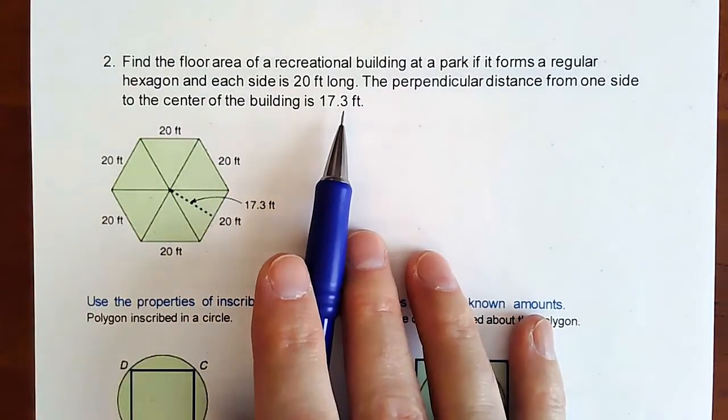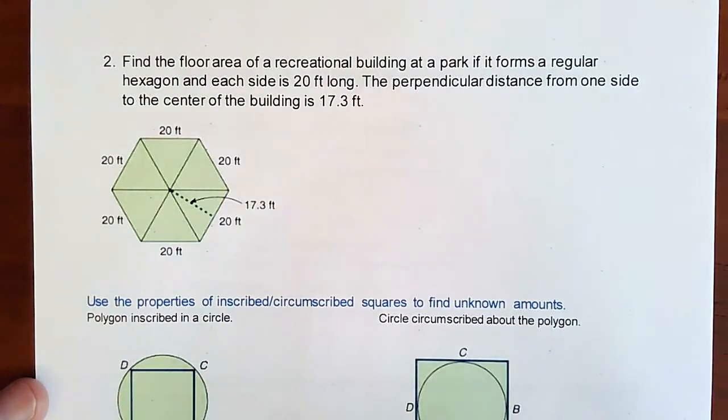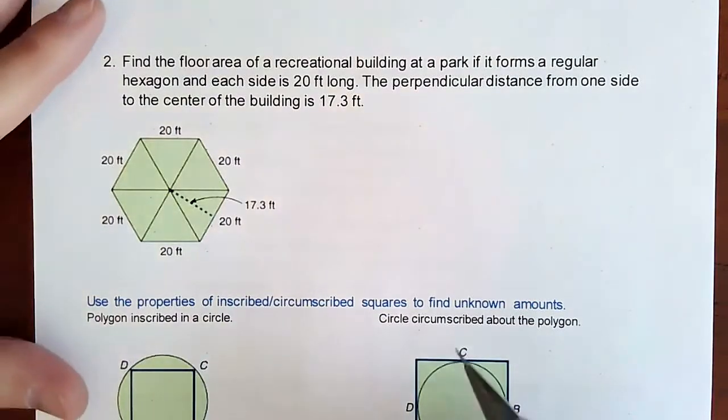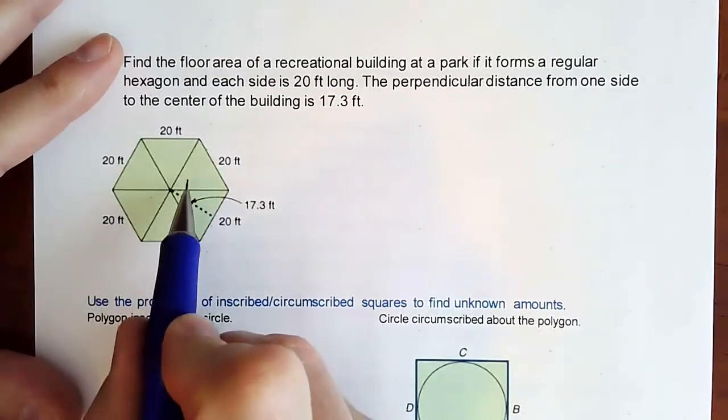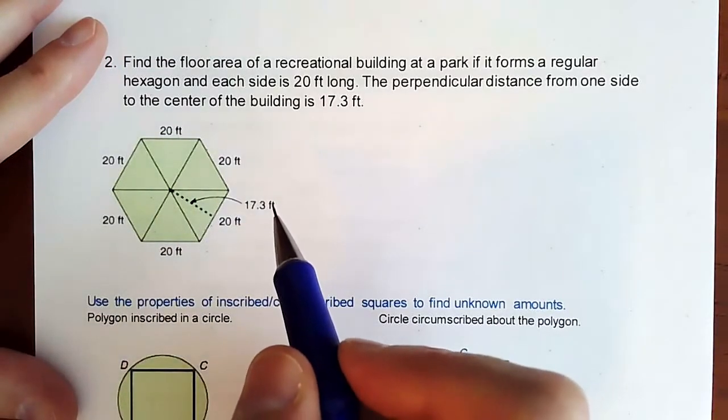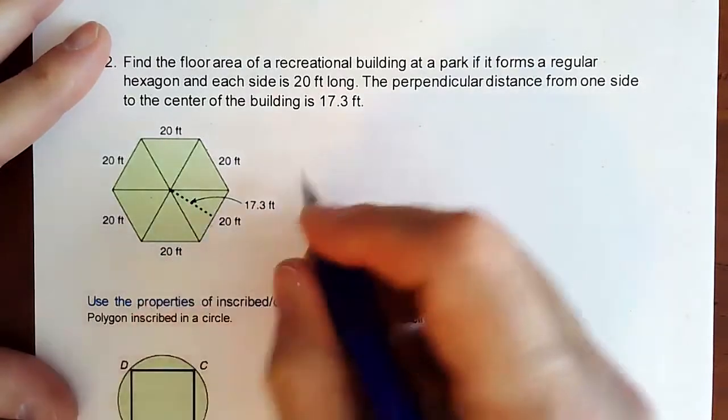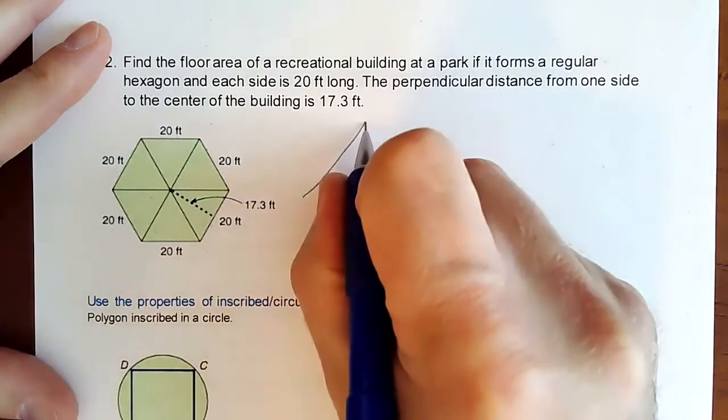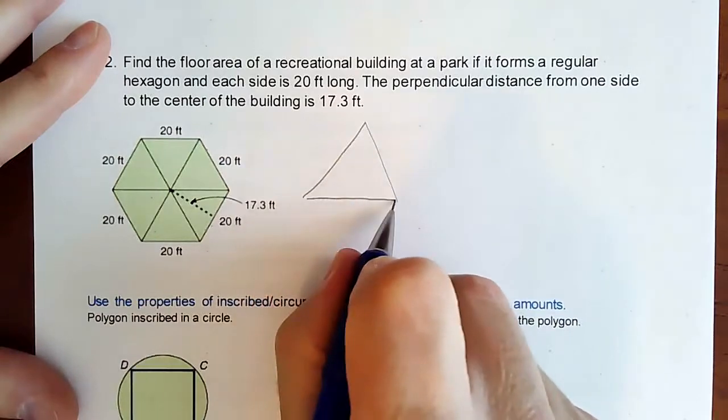To find the area of this, basically you have this hexagon broken into six equivalent triangles, which is great. Really all we have to do is break apart one of these triangles.